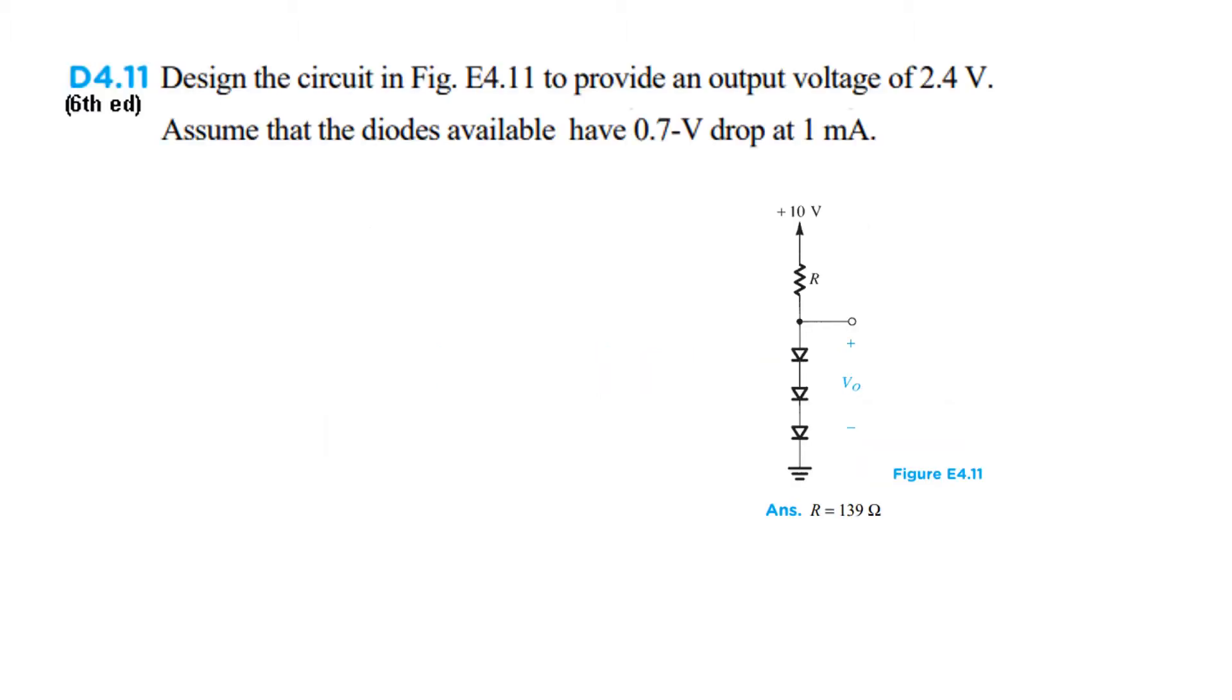Now, we will go to the D4.11 question. Design a circuit to provide an output voltage of 2.4 volt. Assume that the diodes available have 0.7 volt drop at 1 milliampere. For each diode, it has diode characteristics given.